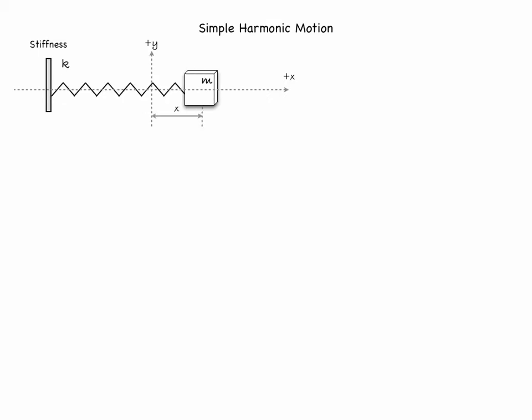Now let's imagine that the block, for whatever reason, has been displaced a distance X from the equilibrium. At this point, any forces that might have been responsible for that displacement cease to act, and we let the block experience only an interaction with the spring in the horizontal direction X. We'll draw a vector to indicate the elastic force on the block due to the spring. That vector will point to the left in this case, and its magnitude is determined from Hooke's law. The elastic force equals minus K times displacement X, where the minus sign means the force is always opposite to the direction of displacement.